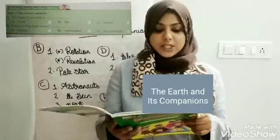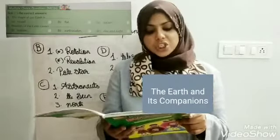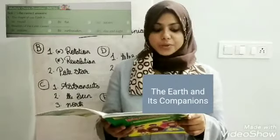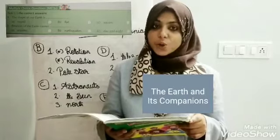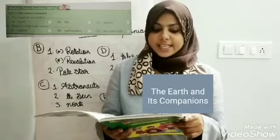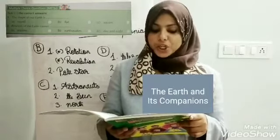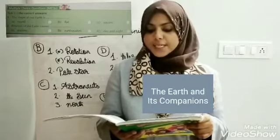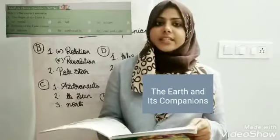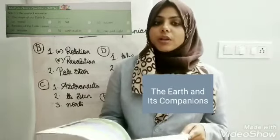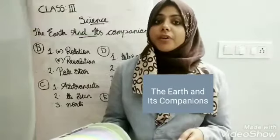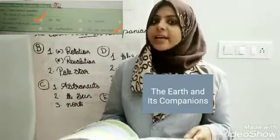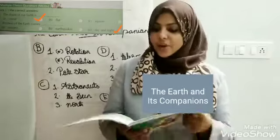Second question: rotation of the Earth causes — Option A: seasons, Option B: earthquakes, Option C: day and night. We know the rotation of Earth causes day and night.